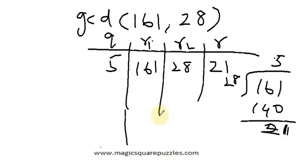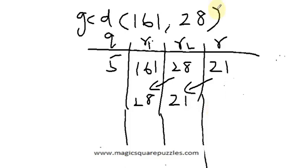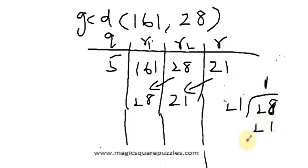Now 28 becomes the new numerator and 21 becomes the new denominator. We repeat the process: 28 divided by 21 goes one time giving 21, so 28 minus 21 is 7. The quotient is 1 and the remainder is 7. It doesn't stop here — we continue shifting.